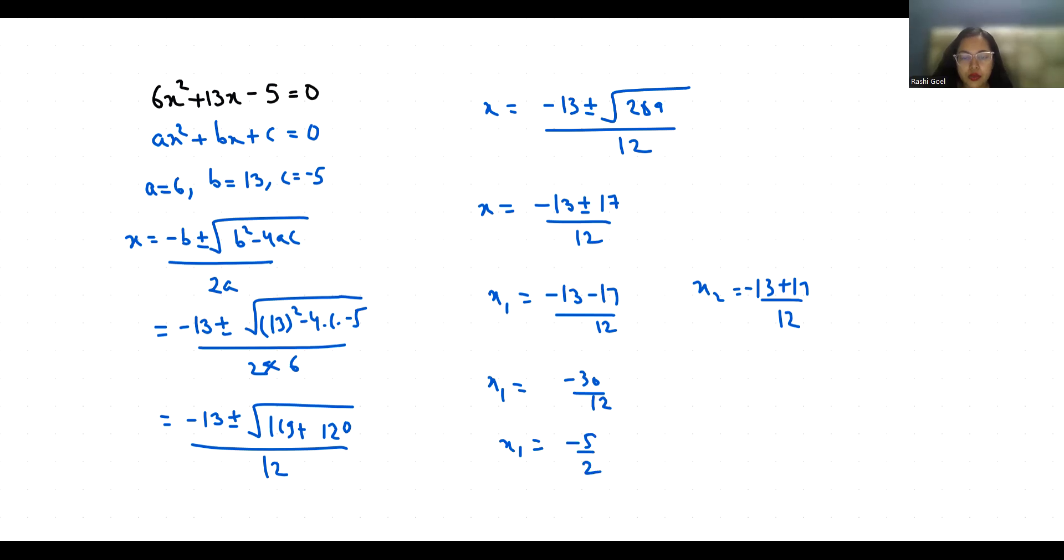Now x2 is minus 13 plus 17 is plus 4 by 12. When we divide both numerator and denominator by 4, we get 1 by 3.